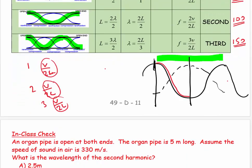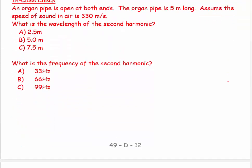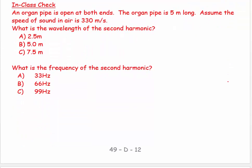So let's look at some questions on this. An organ pipe is open at both ends. The organ pipe is 5 meters long. Assuming the speed of sound in air is 330 meters per second. What is the wavelength of the second harmonic?